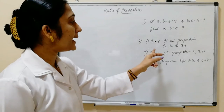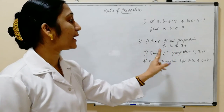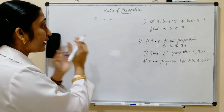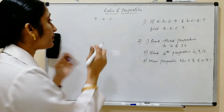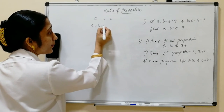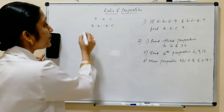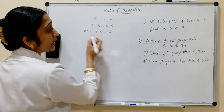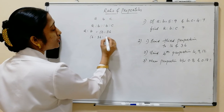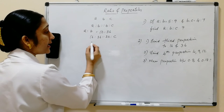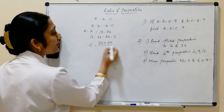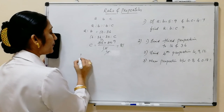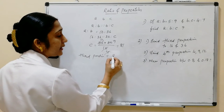Second question, first part: find the third proportion to 16 and 36. For third proportion, A:B :: B:C. So 16:36 :: 36:C, which gives C = (36×36)/16 = 1296/16 = 81. The third proportion is 81. Second part: find the fourth proportion where 4:9 :: 12:D. D = (9×12)/4 = 108/4 = 27. The fourth proportion is 27.